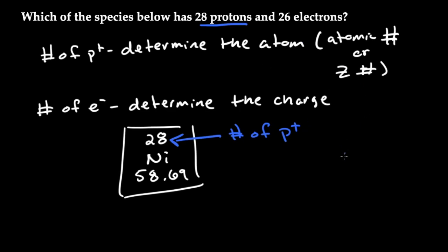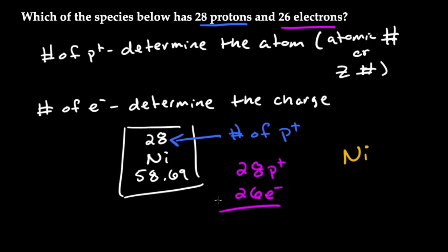So this would be Ni. The number of electrons is going to tell us the charge. If we have 28 protons and 26 electrons, we can say we've got 28 protons and 26 electrons. When we subtract the two, we're going to see that we've got a 2+ charge.